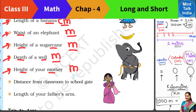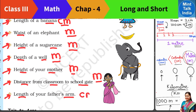Then the height of your mother — we measure the height of your mother in meters. The distance from your classroom to the school gate — the school gate is a little far but we cannot use a scale for it, so it works in meters. And the last one is the length of your father's arm. If we use our 30 cm long ruler, we can measure our father's arm in centimeters.